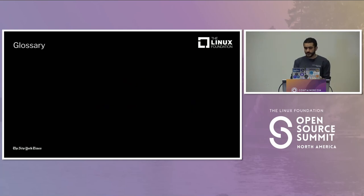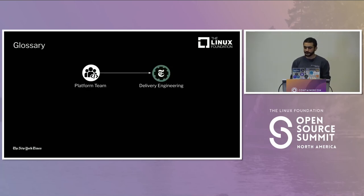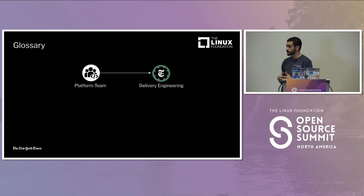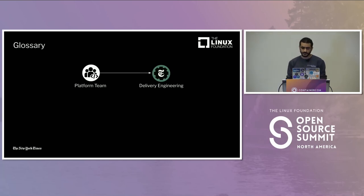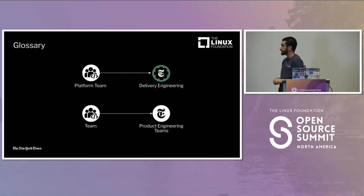To get on the same page, here are a couple of distinctions to explain the upcoming sections. When I refer to a platform team, I'm referring to my organization, Delivery Engineering, which builds and maintains the platform and tooling to help product engineering teams. When I refer to teams, that's our amazing engineering teams that build all of the products I talked about.